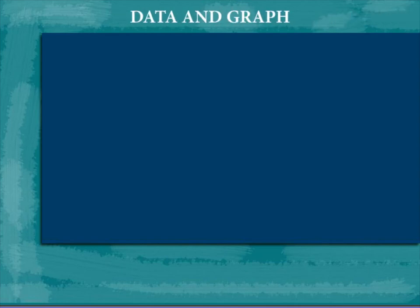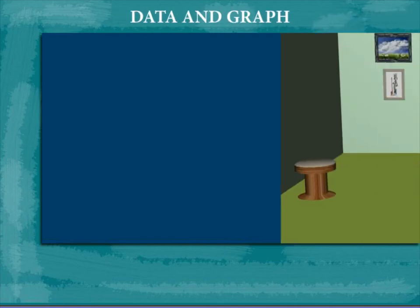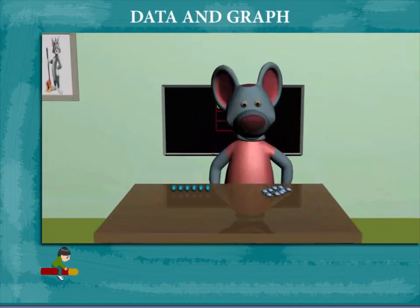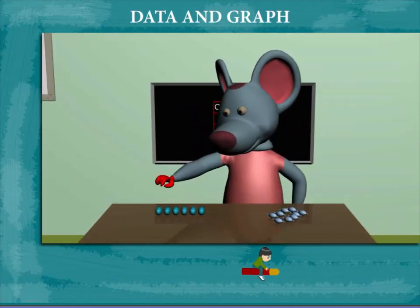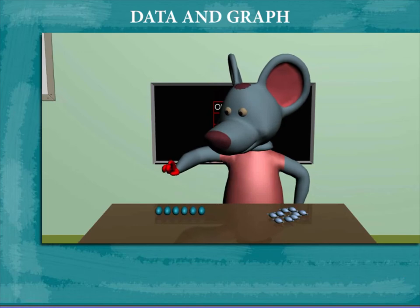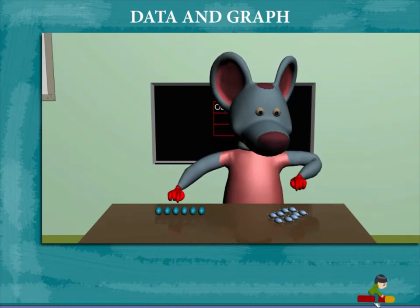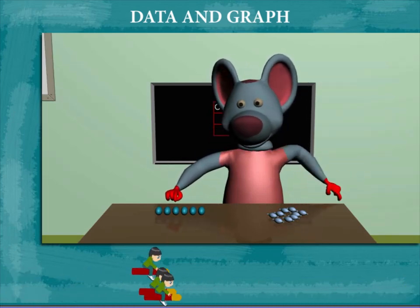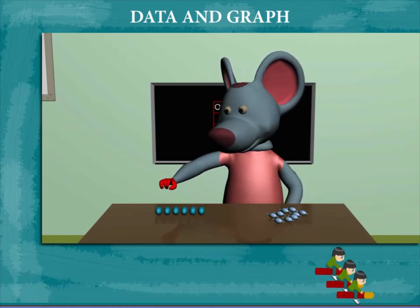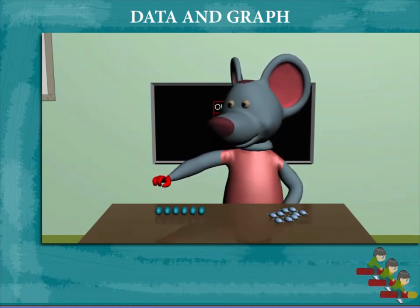Data and Graph: Robbie Mouse is here to tell us how to make a data table. He counts the eggs on the table.